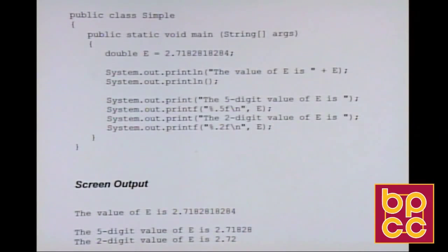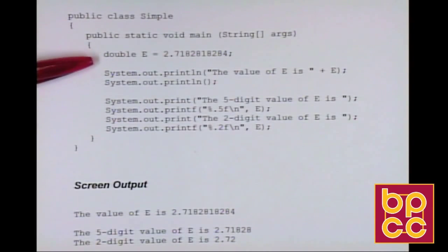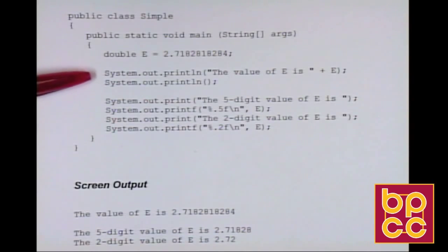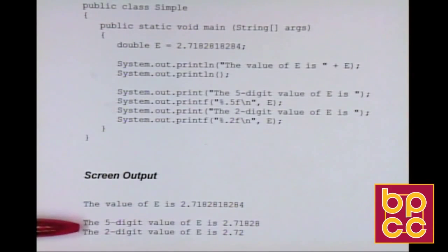Now if we want to print floating point data, we need to use format commands to format our output. For example, we declare a double E with the value 2.7182818284, which is a standard math constant. If we just print it out, the screen displays the entire value of E. But if we want to limit the number of decimal places displayed, we can use a format command.